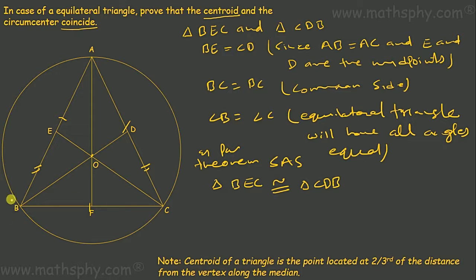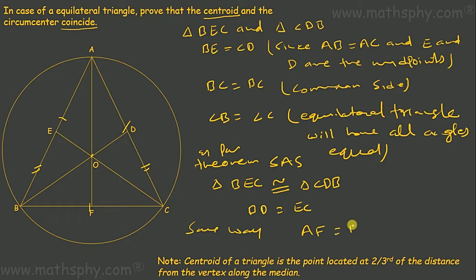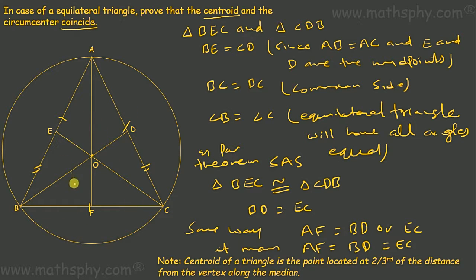So using the SAS theorem, triangle BEC is congruent to triangle CDB. Therefore BD is equal to EC. The same way, I can prove that the third median AF is equal to BD or AF is equal to EC. So AF is equal to BD is equal to EC — all three medians are equal to each other.